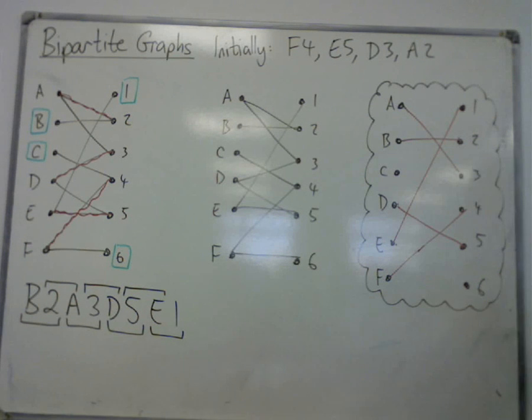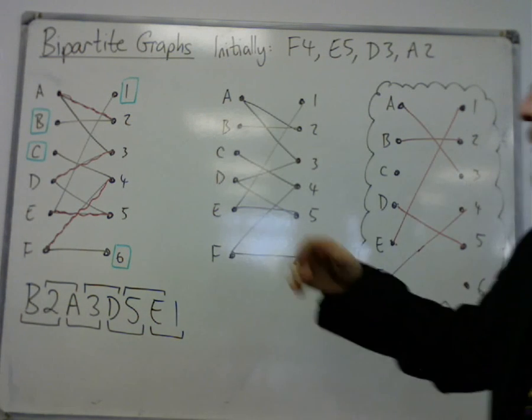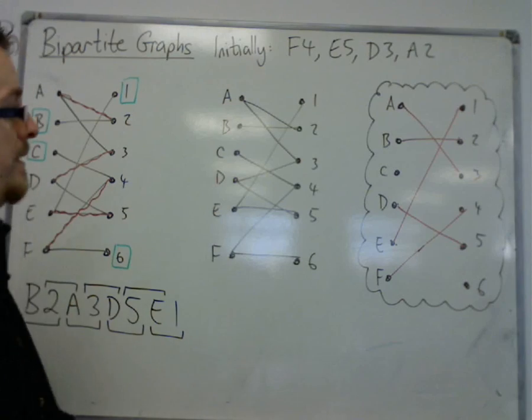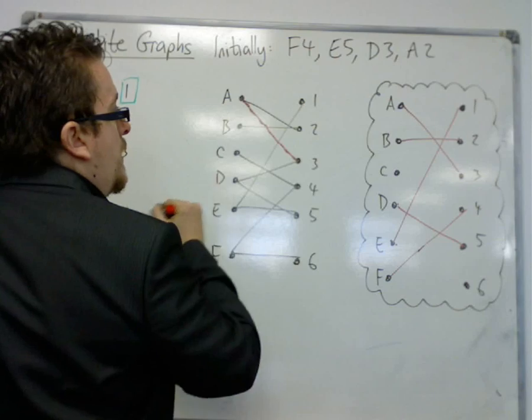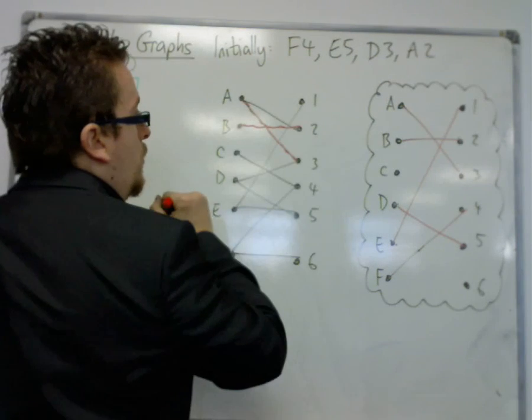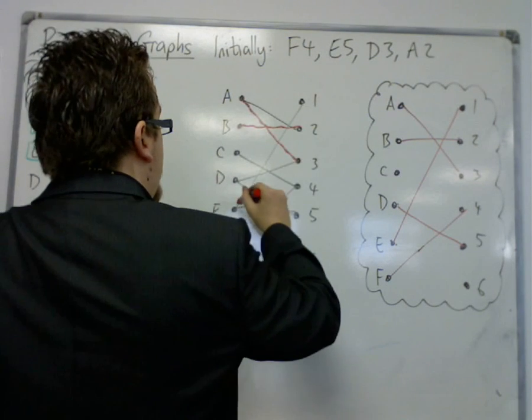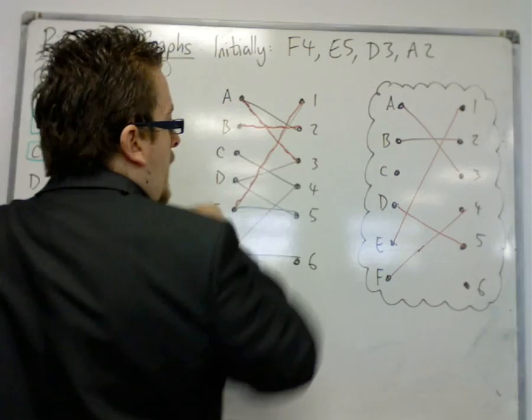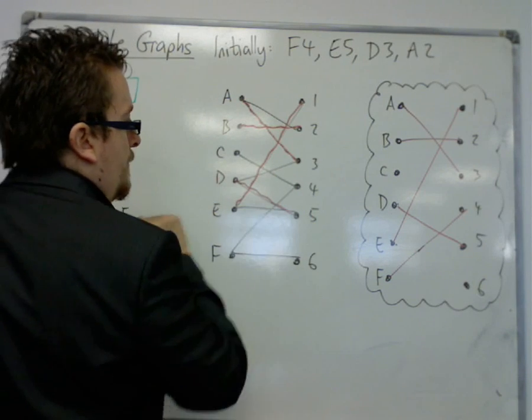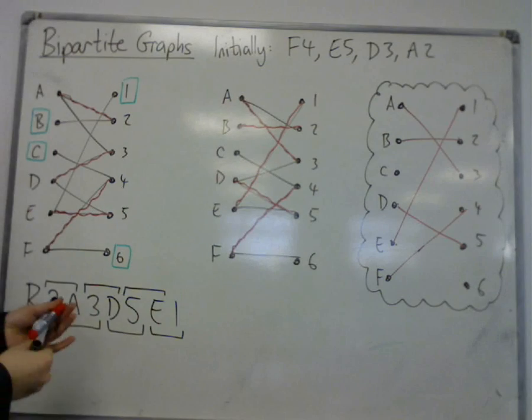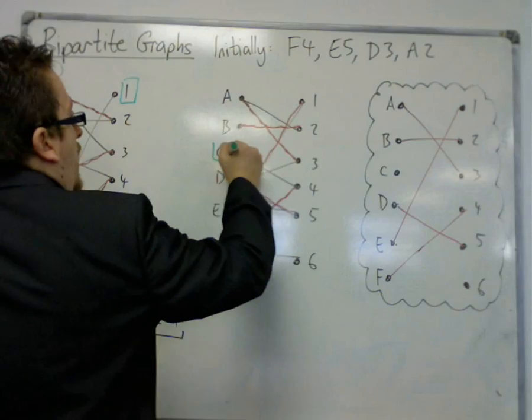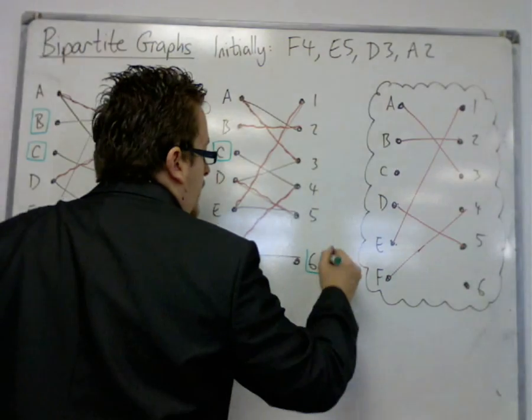This is my current matching over here. This is my alternating path that allowed me to get there. So I currently have a connected to 3, b connected to 2, e connected to 1, and d connected to 5, and f to 4. My remaining two unmatched vertices are c and 6.